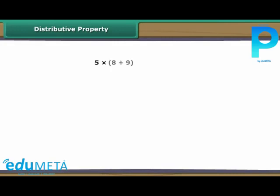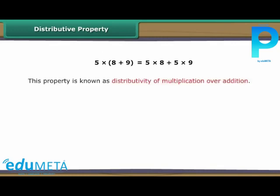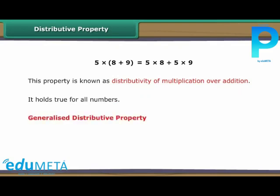Distributive property: Consider the expression 5 into (8 plus 9). It can also be written as 5 into 8 plus 5 into 9. This property is known as distributivity of multiplication over addition. It holds true for all numbers. We can generalize it with variables as: (A plus B) into C is equal to A into C plus B into C.